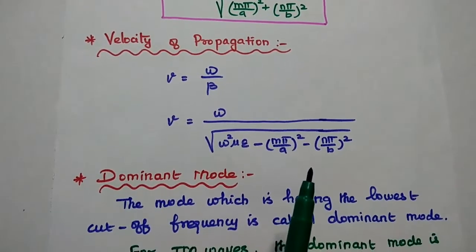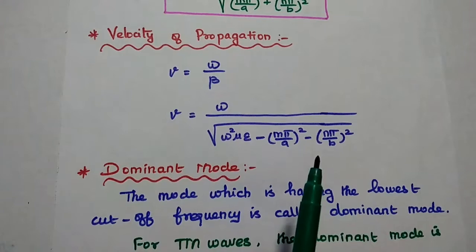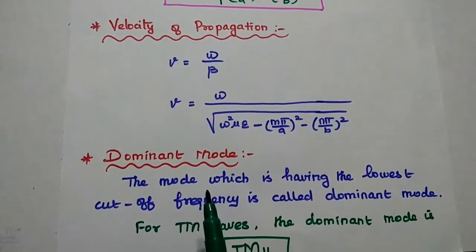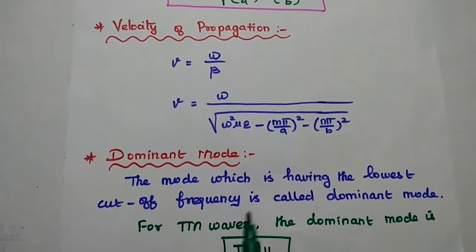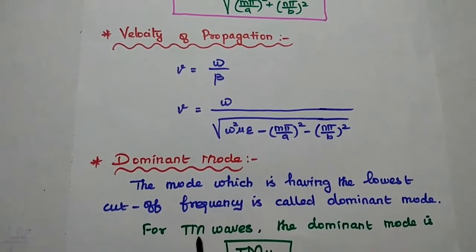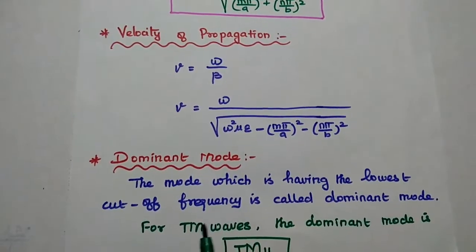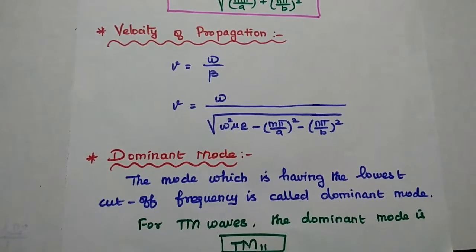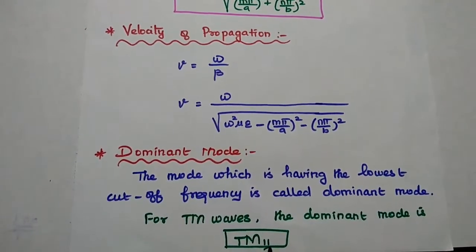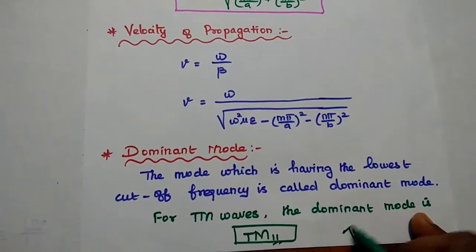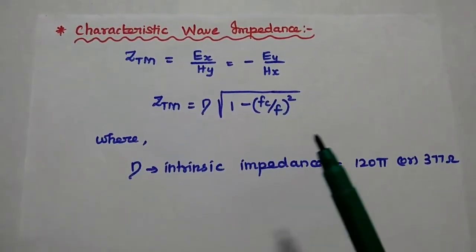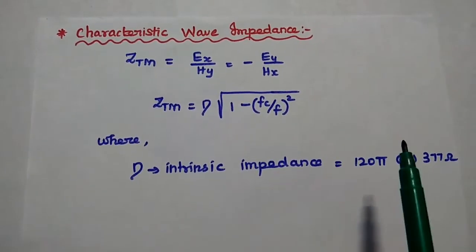Next, dominant mode. The dominant mode is the mode which has the lowest cutoff frequency — that is the point where the first propagation starts. For TM waves, the dominant mode is TM11, where 1 and 1 are the values of M and N respectively.